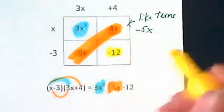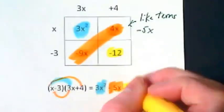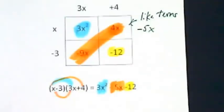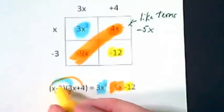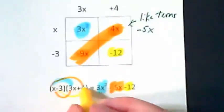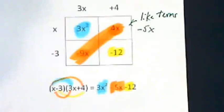What's left here then is our constant of negative 12. And it comes here. Negative 3 times positive 4.